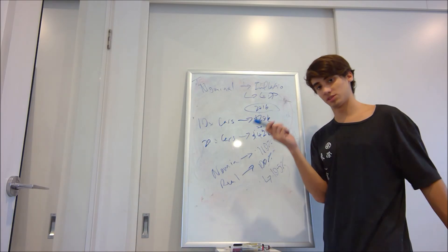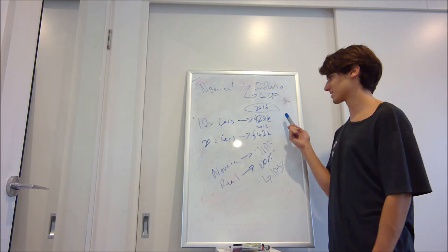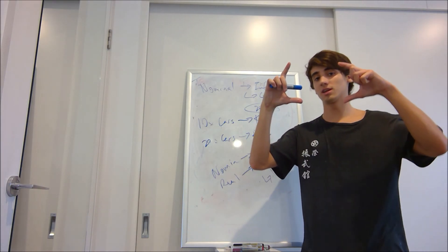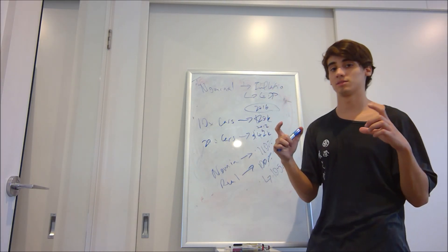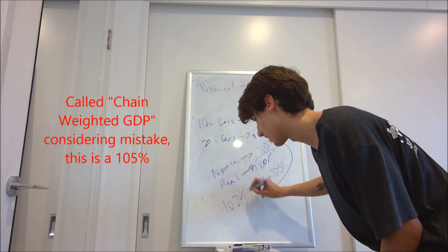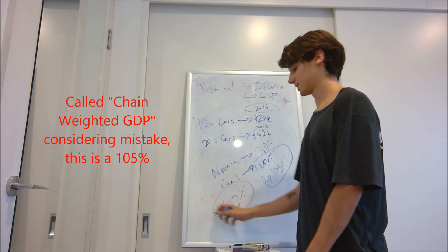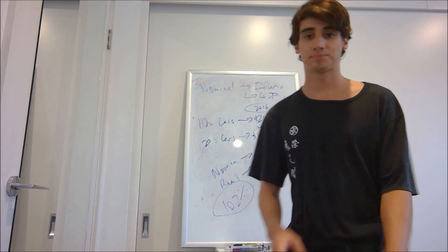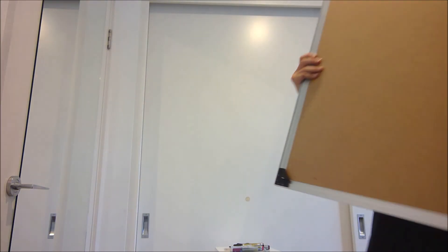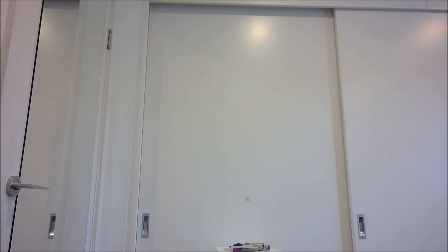This is elementary. It simply means as you change the base year, the base proportions increase can change. Because the price will change and the quantity will change. So what you do to get the actual GDP increase is you take these and get the average. You would say the GDP increase ultimately in this example is 102.5%.